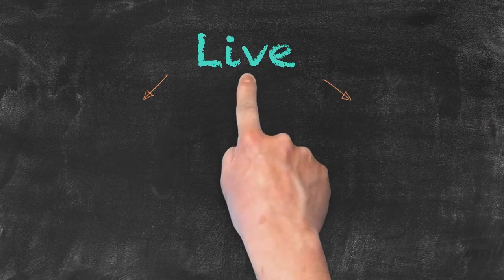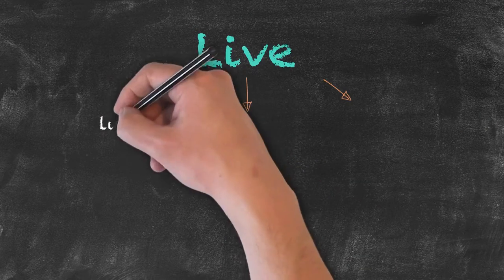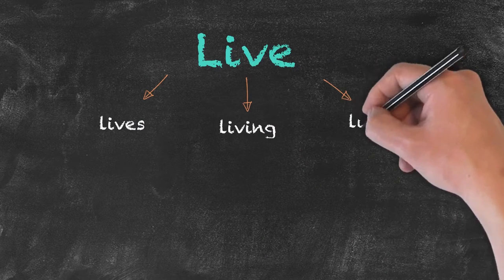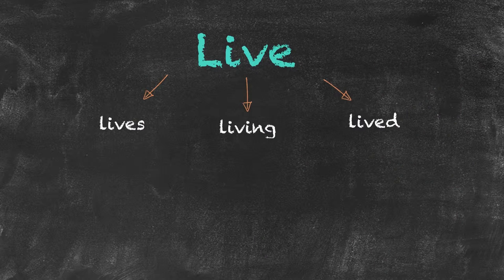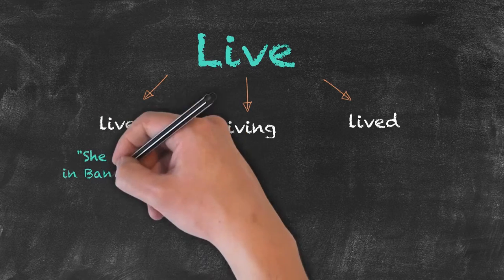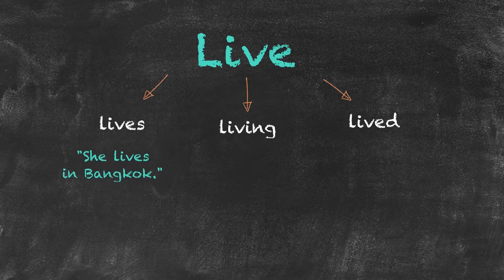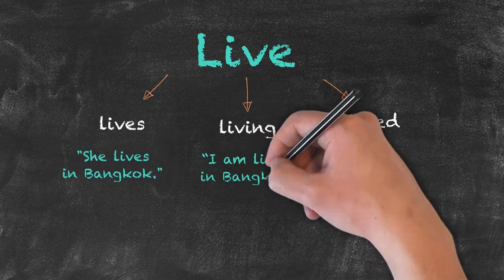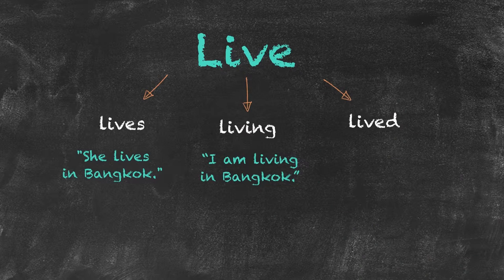Take for instance the verb 'to live.' We could use it as live or lives, living or lived. 'I live' or 'she lives in Bangkok' means the present. 'I am living in Bangkok' is still the present.